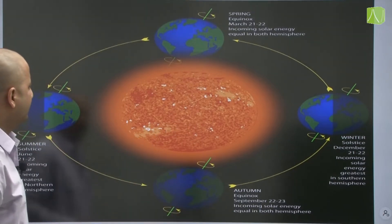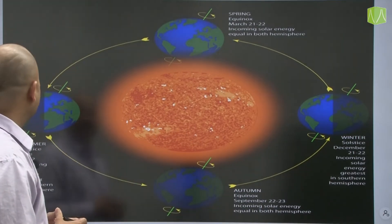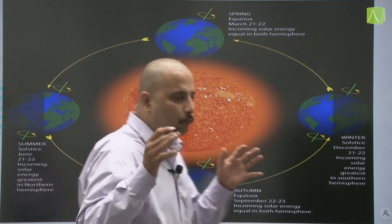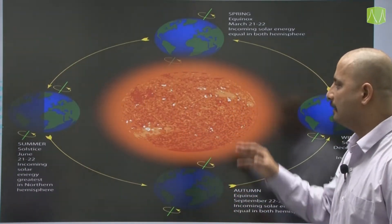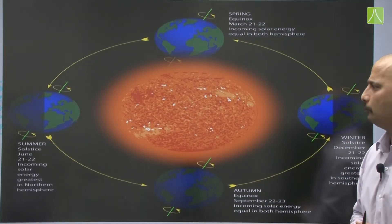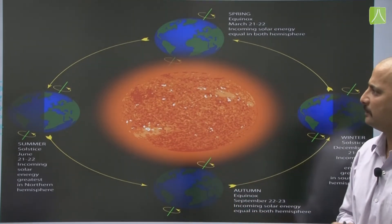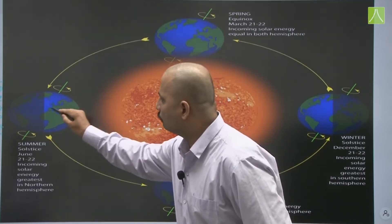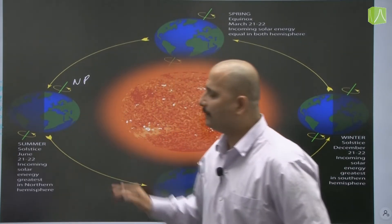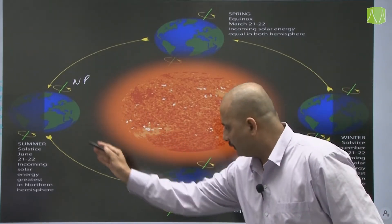Again in this image the sun is much more clearly visible. Here summer solstice is shown, with dates mentioned: summer solstice happens around June 21 and 22, with incoming solar energy greatest in the northern hemisphere. You can clearly see this is the northern hemisphere — the north pole — and the most heat is received here.